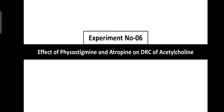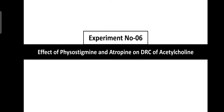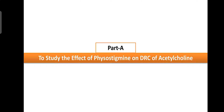Today we learn regarding the effect of physostigmine and atropine on the dose-response curve of acetylcholine. This experiment is divided into two parts, part A and part B. In part A, we study the effect of physostigmine on the dose-response curve of acetylcholine, and in part B, we study the effect of atropine on the dose-response curve of acetylcholine.